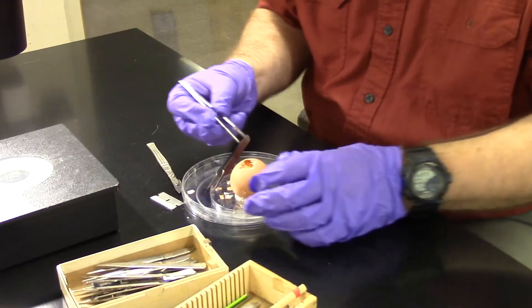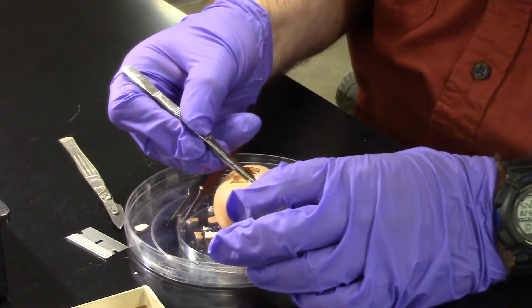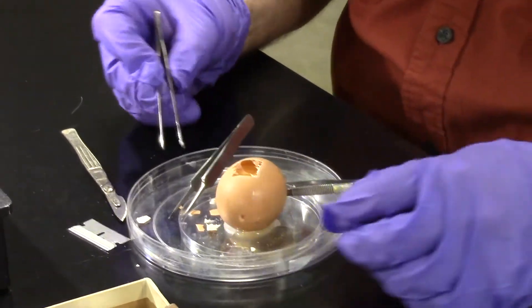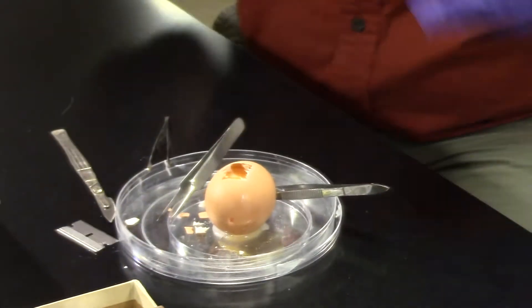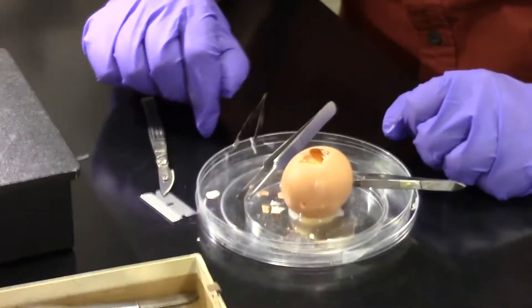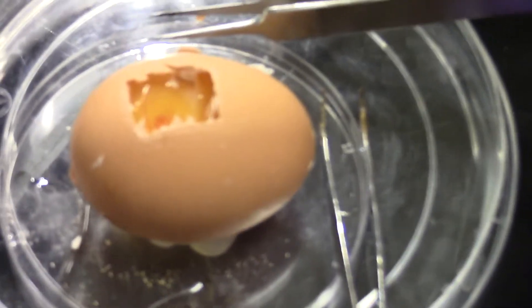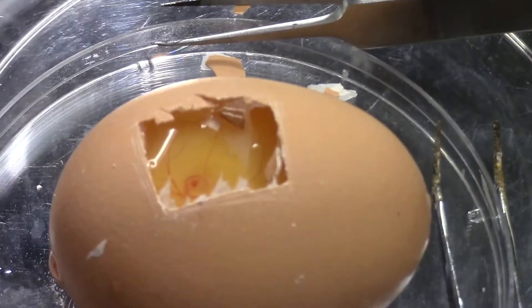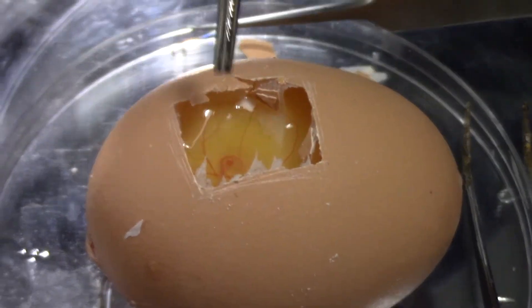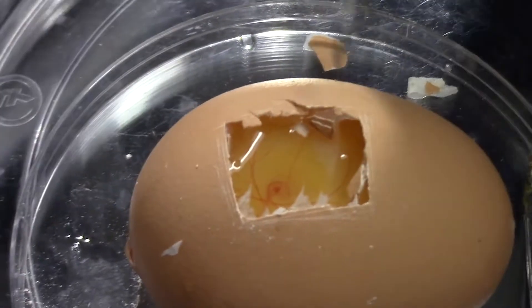Let me grab some fatter forceps and I'm just going to grab and pull. There we go. Come and look straight down in and we'll see the embryo itself. Do you see the little red spider? This is the head. The head has turned a little bit to your right. The legs are down there. And there are blood vessels coming off on each side.